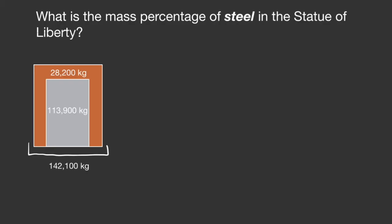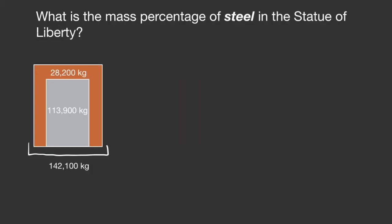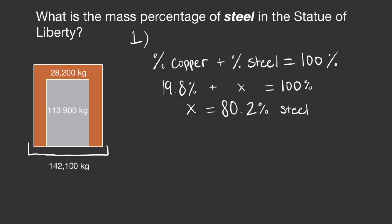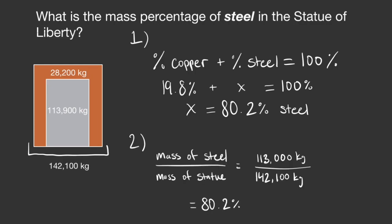What if we followed up by asking: what is the mass percentage of steel in the Statue of Liberty? Pause the video and calculate the percentage of steel. A quick way to do this is to recognize that the percentages of copper and steel must add up to 100%, since they are two parts of the whole. So 100% minus 19.8% gives us 80.2% steel. Alternatively, we could calculate the percent of steel the same way — dividing the mass of steel by the mass of the statue — to get the same 80.2%.